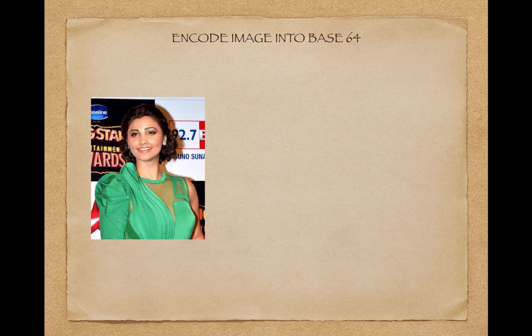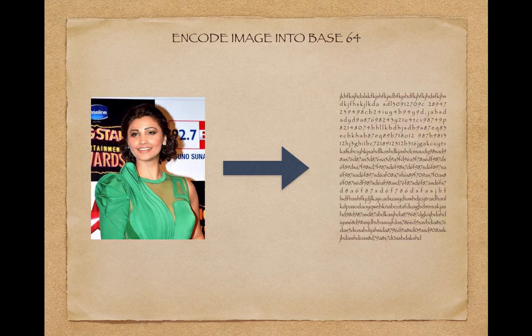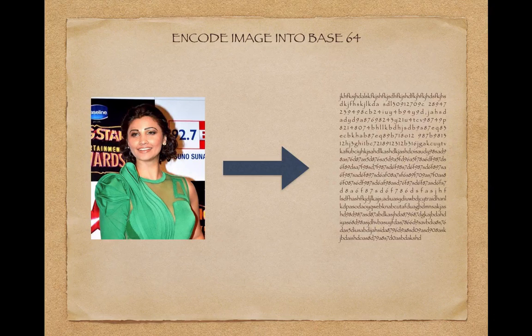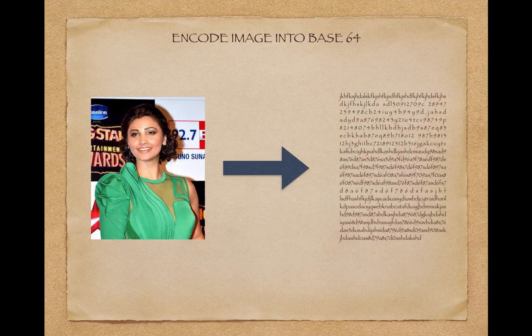Encoding the image into base64: the image is in binary data, and using base64 we convert this binary data into an ASCII text string. This text string looks like a long string, and by doing so it will be easy to send the image through the POST request. We can also send other POST data variables alongside it.